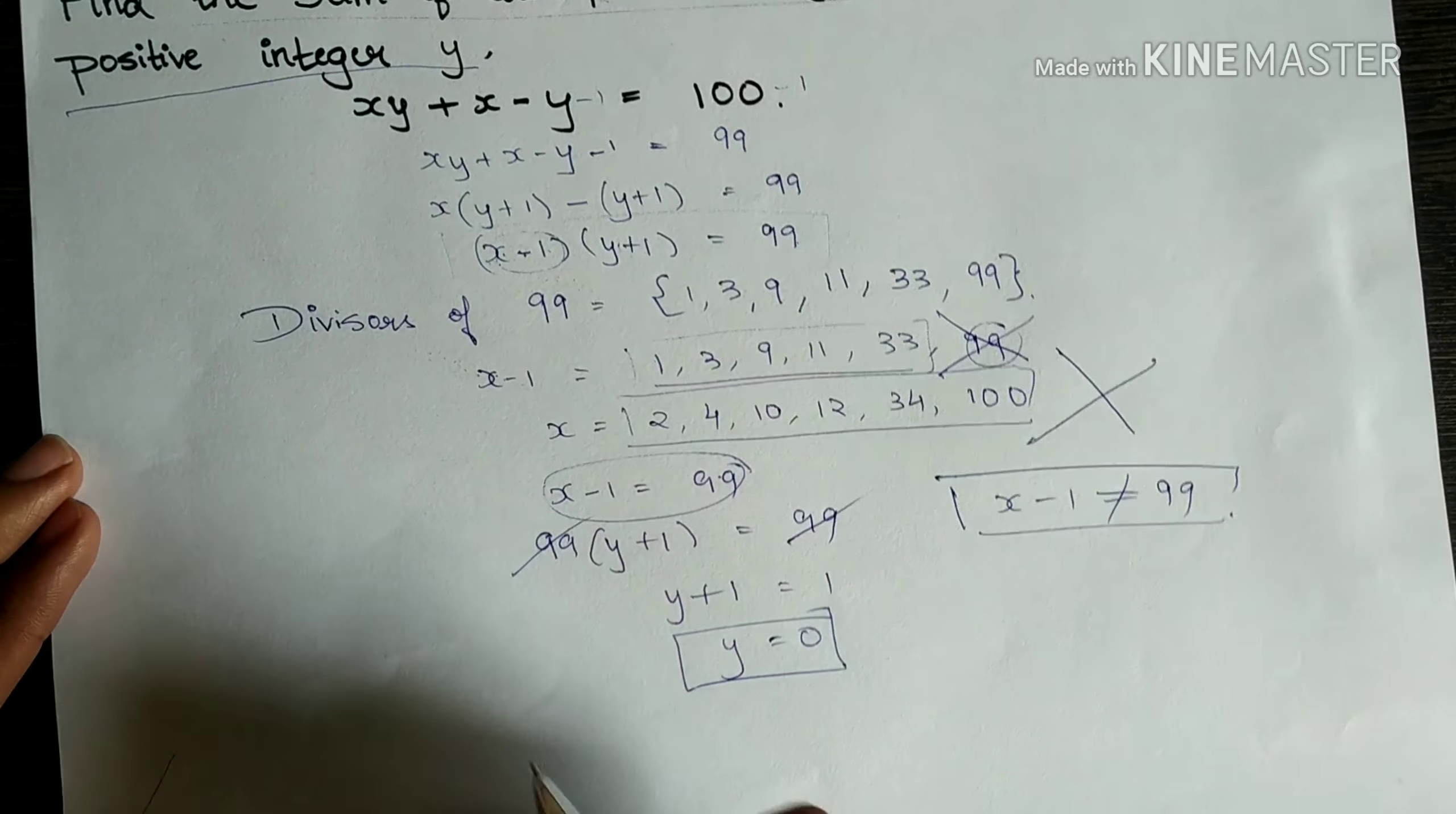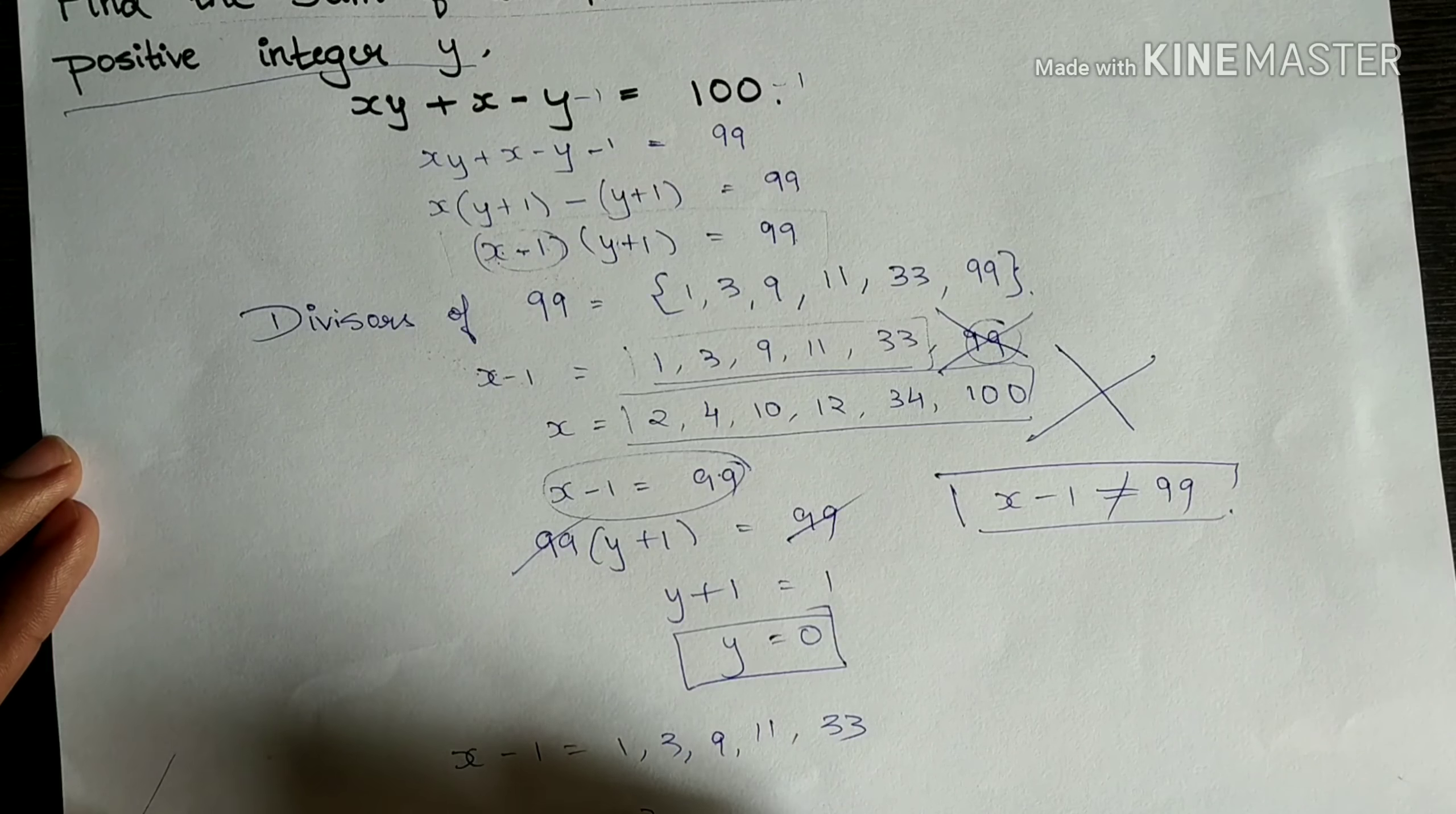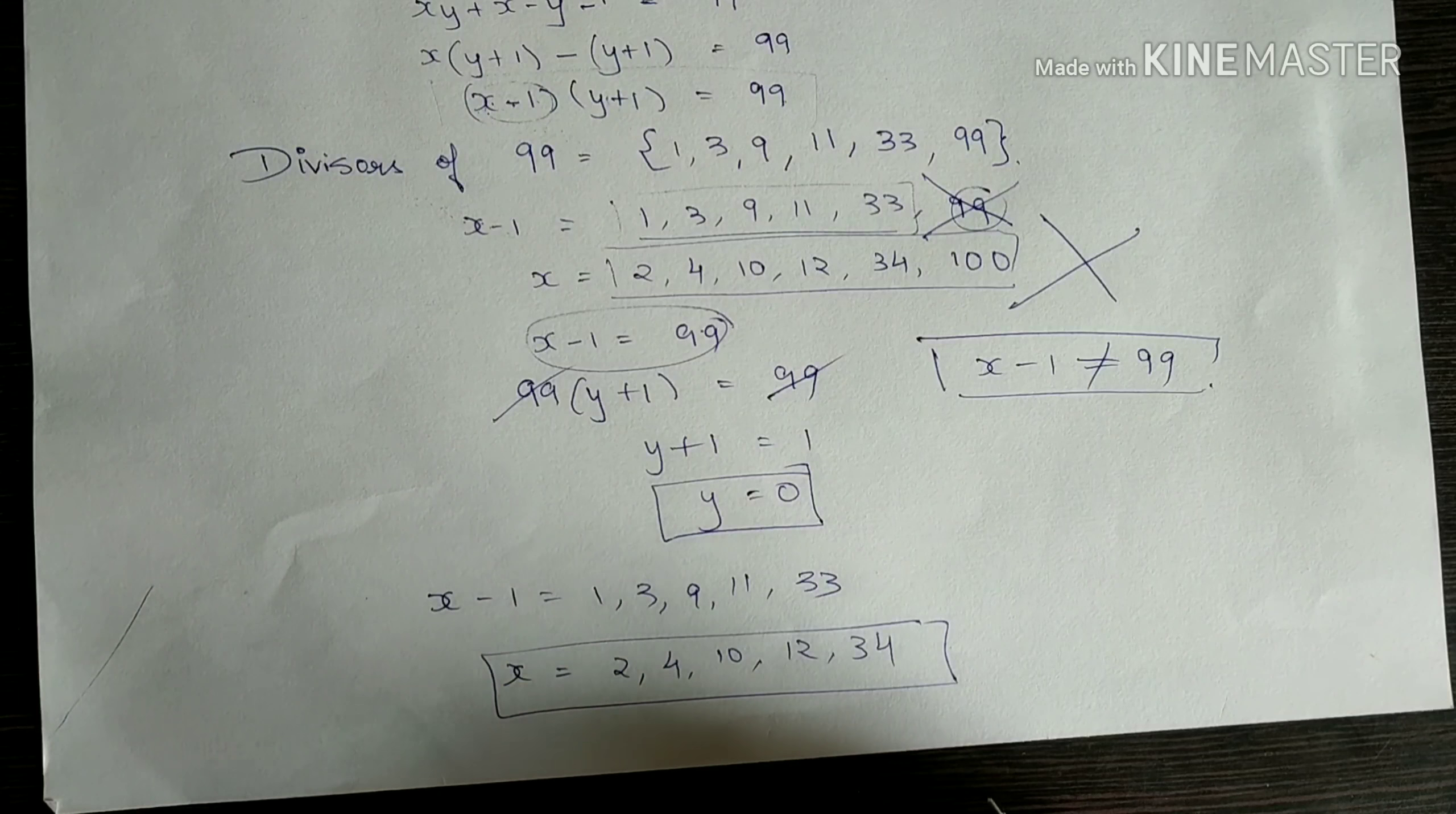So what you are supposed to do is discard this value. Discard 99. Now the answer will be x minus 1 is equal to 1, 3, 9, 11, 33. So x equal to 2, 4, 10, 12, and 34. All you need to do now is add all of them.